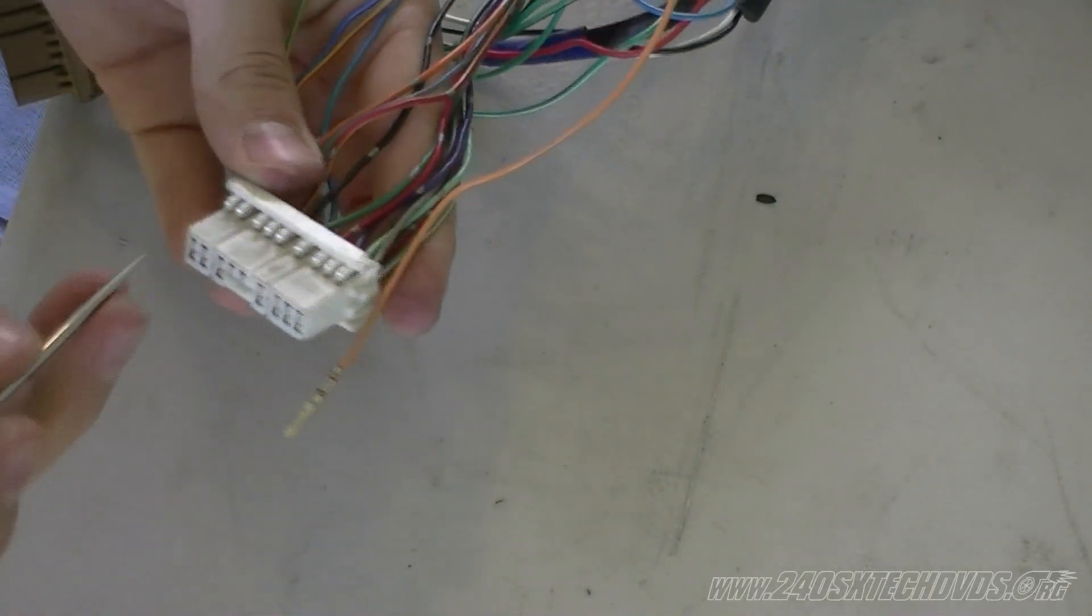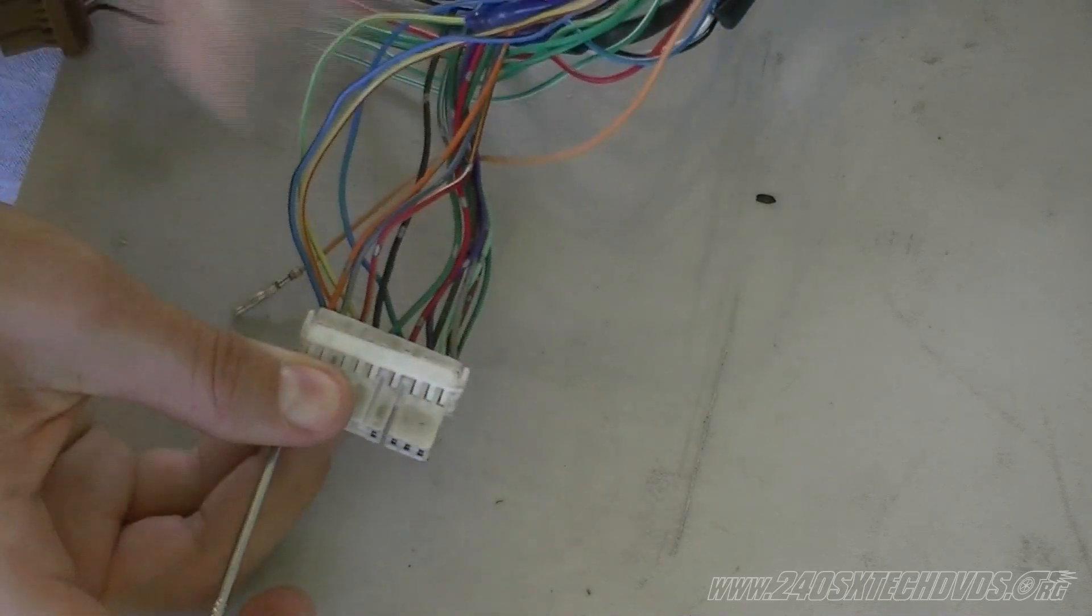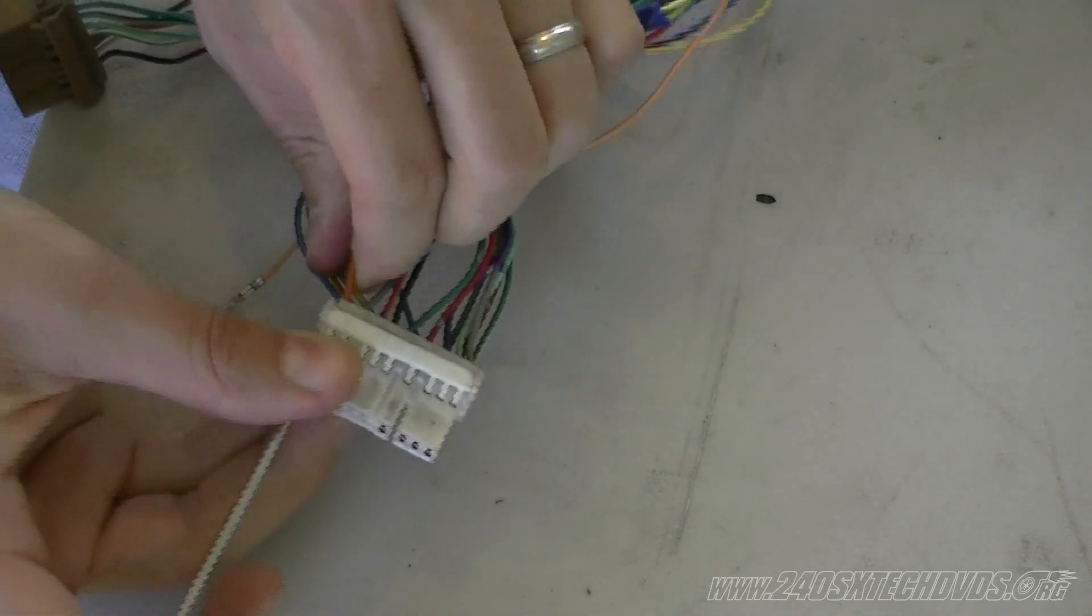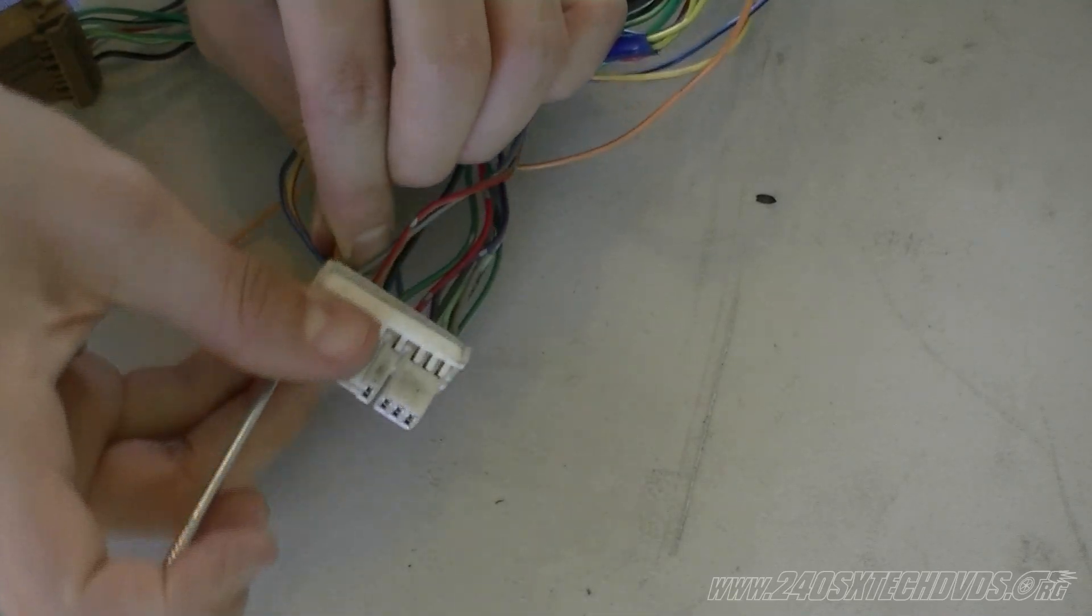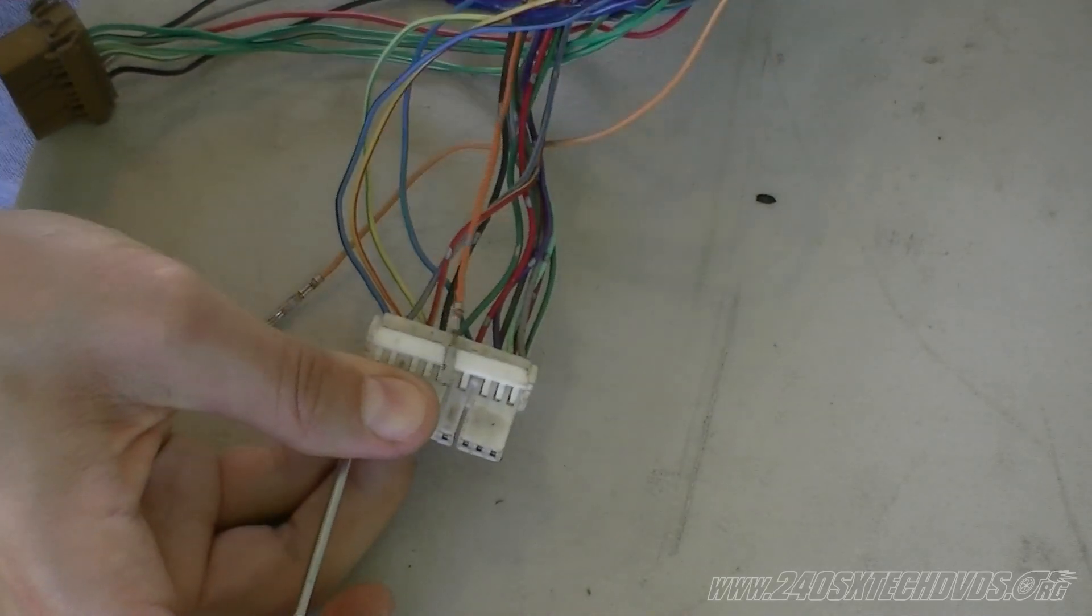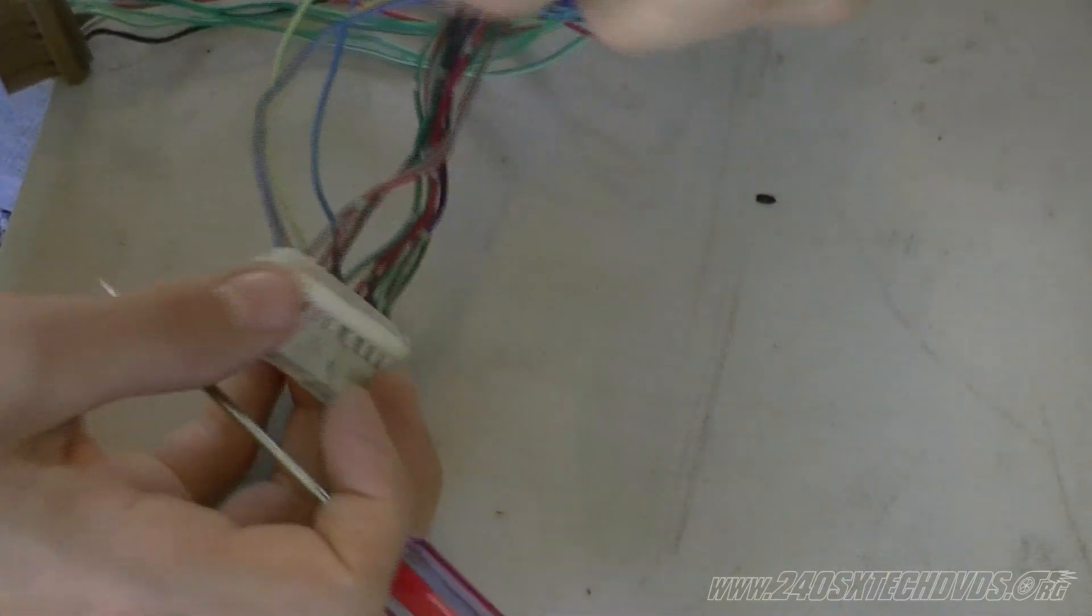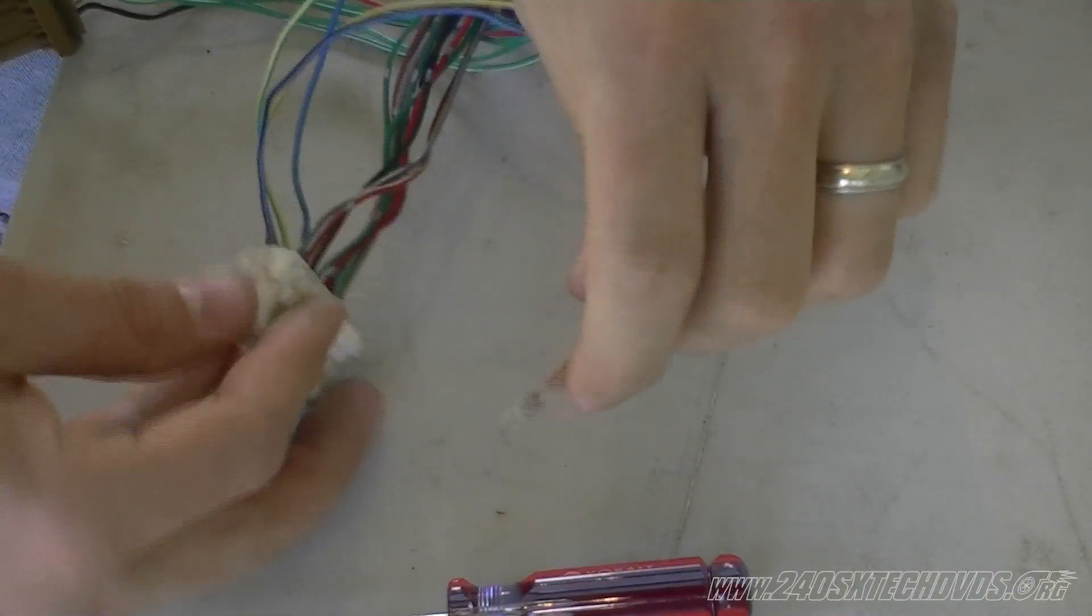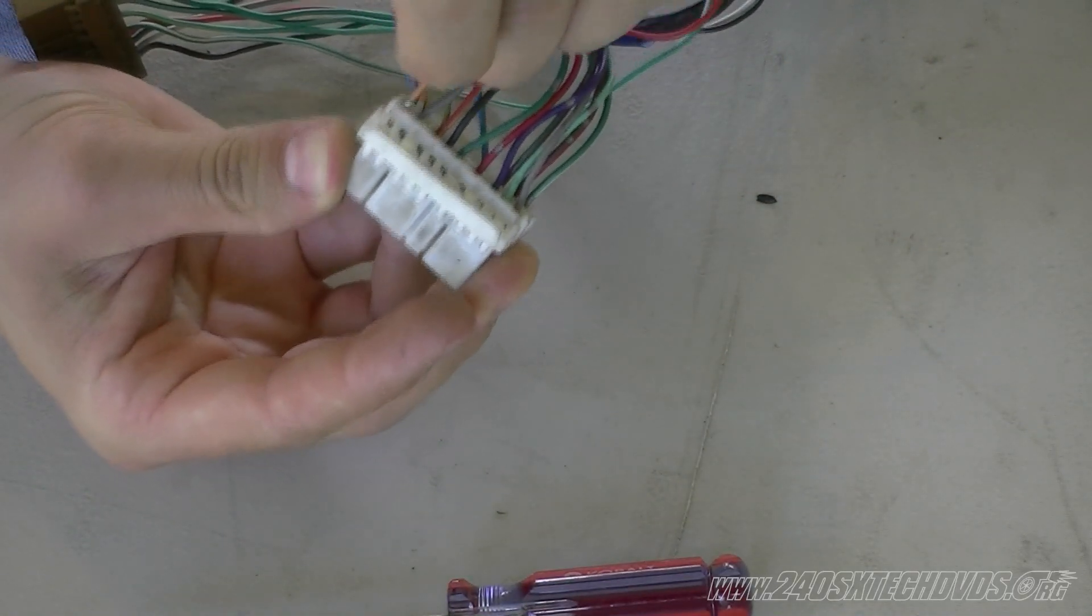Now I'll de-pin this one from the single overhead connector and we'll connect the wire from the dual overhead to the single overhead connector.